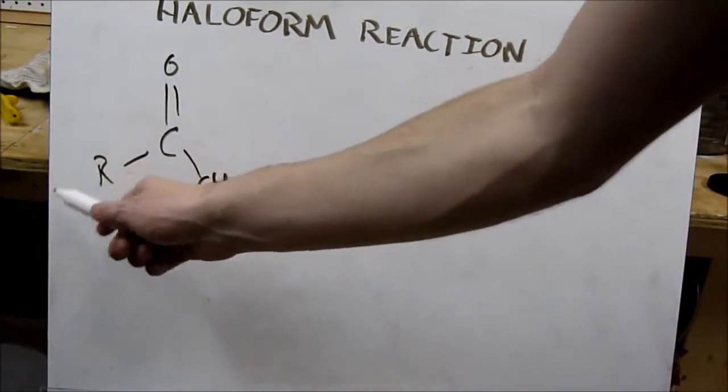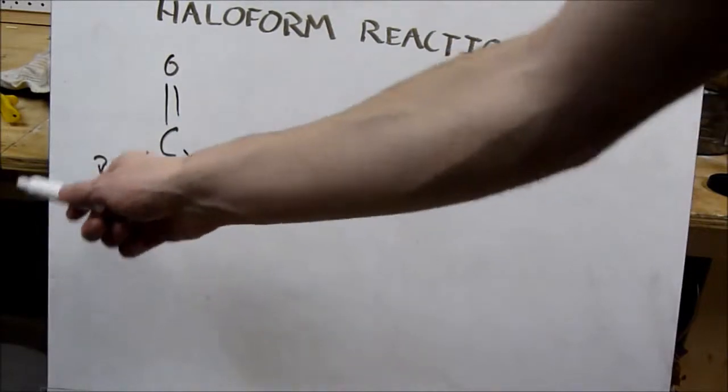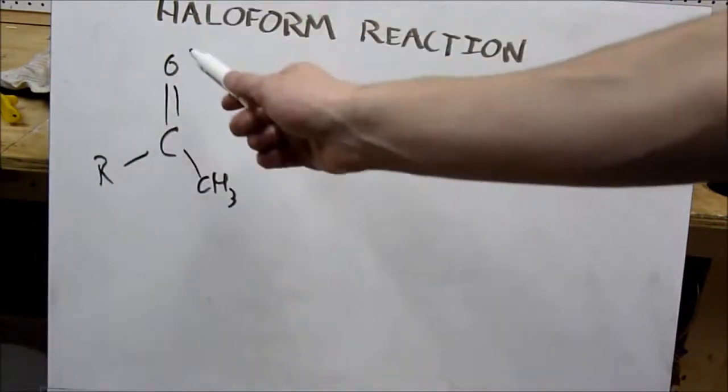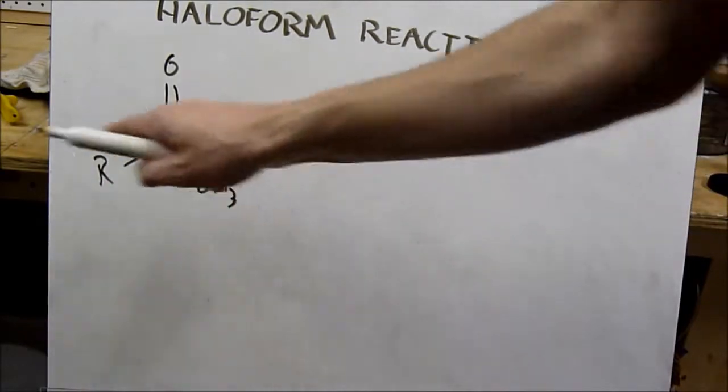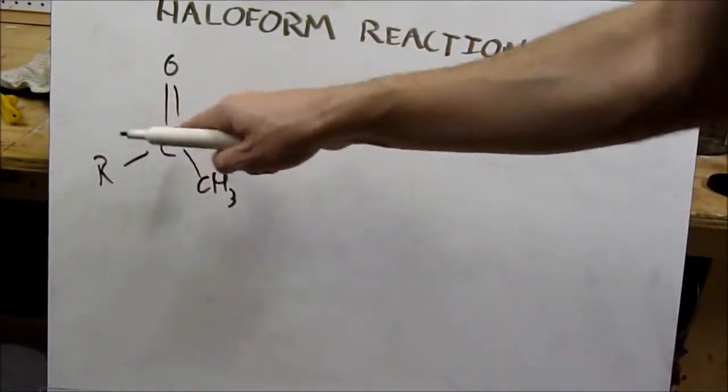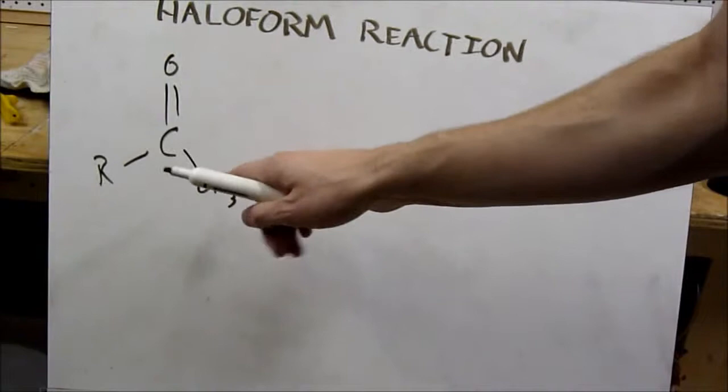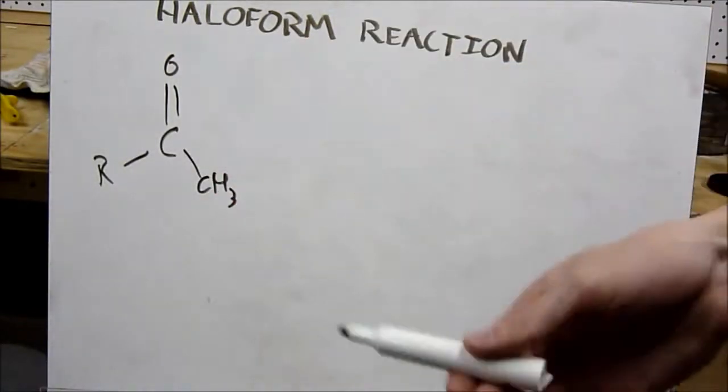I could put a CH2CH3 on here, which is a two carbon chain, and that would become methyl ethyl ketone, because two carbons would be an ethyl group. So methyl ethyl ketone, also butanone.